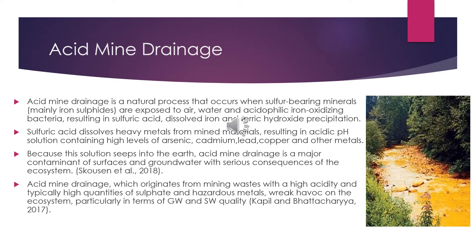Acid mine drainage is a natural process that occurs when sulfur bearing minerals, mainly iron sulfides, are exposed to air, water, and acidophilic iron oxidizing bacteria, which results in sulfuric acid, dissolved iron, and ferric hydroxide precipitation. Because the solution seeps into the earth, acid mine drainage is a major contaminant of surface and groundwater with serious consequences on the ecosystem.